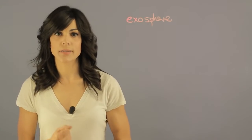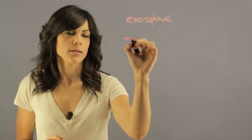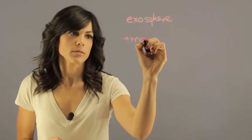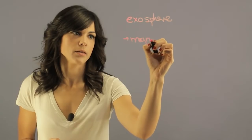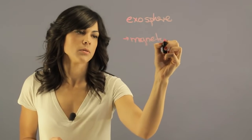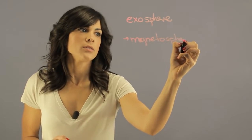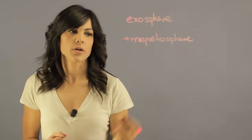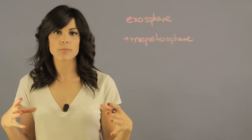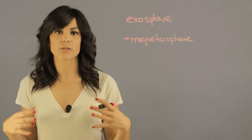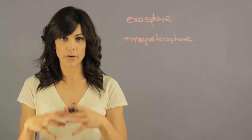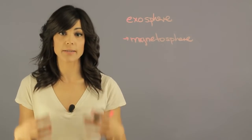So what's causing this exosphere? Ganymede is quite small, but it actually has a magnetosphere. The magnetosphere is the area surrounding the object that is charged by the object's magnetic field.